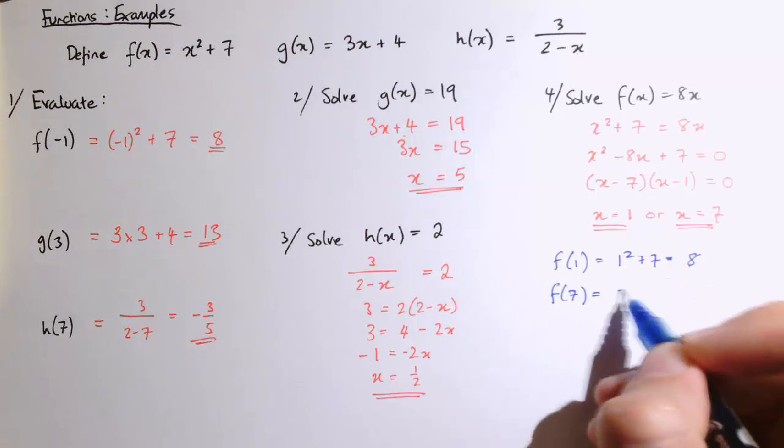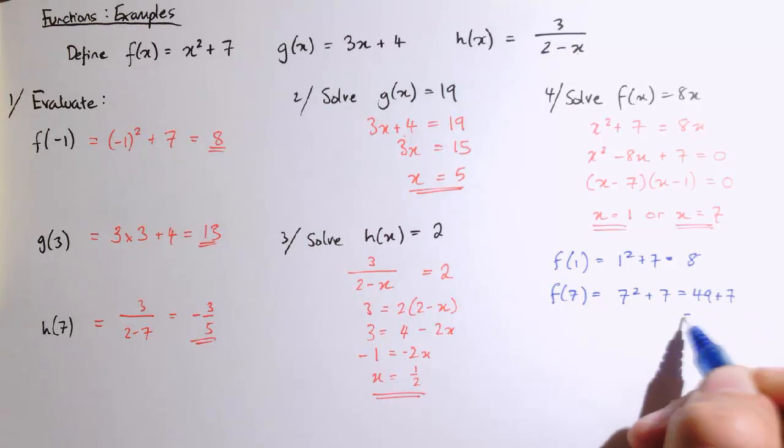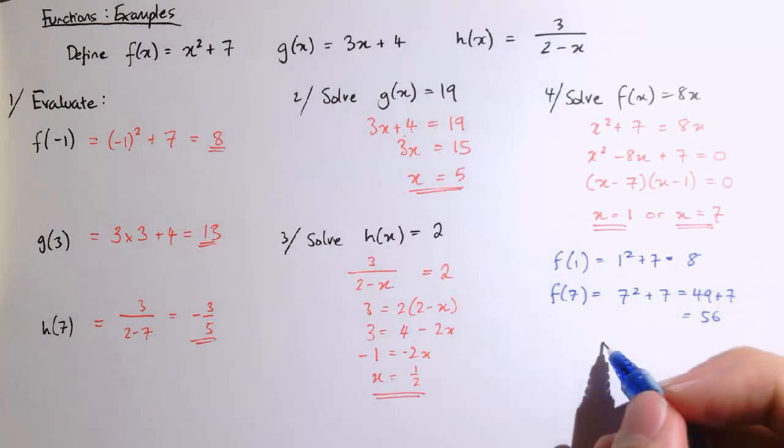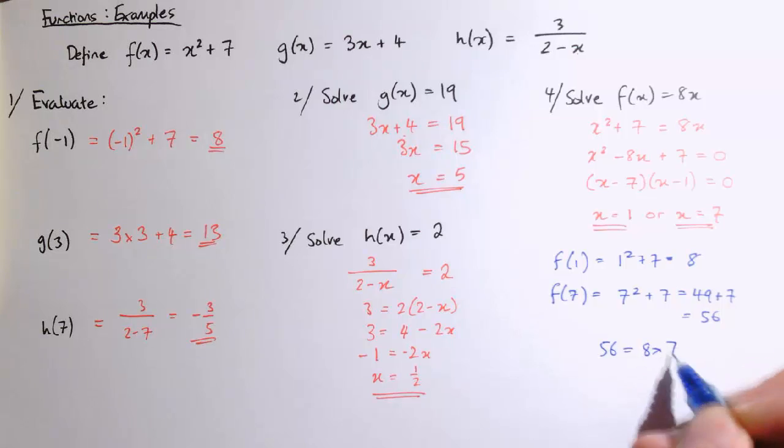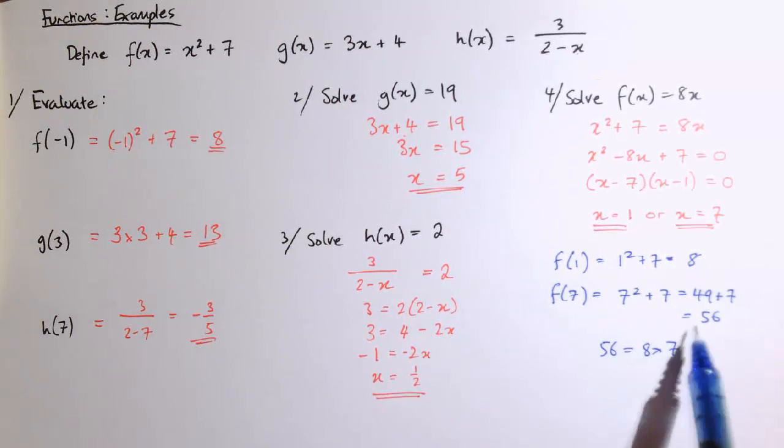And similarly, if we did f of 7, that's 7 squared plus 7, which is 49 plus 7, which is 56. And we know that 56 is 8 times 7. So that's also another value that is 8 times the input.